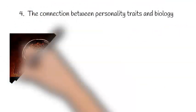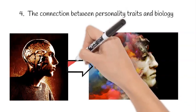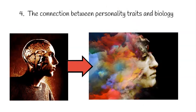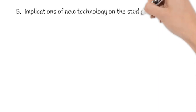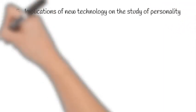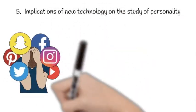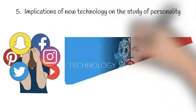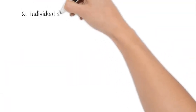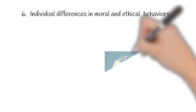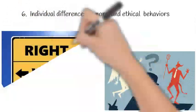A fourth cutting-edge issue in personality psychology is the connection between a person's traits and their biology. Evidence is now beginning to accumulate that shows the connection between personality traits and the function of our brains. A fifth issue in personality psychology are the implications of new technology to the study of personality. New technologies allow the expression and study of personality in exciting ways. For example, Facebook posts can be studied as an expression of personality. A sixth issue is that gradually there is realization of the importance of studying individual differences in moral and ethical behaviors.